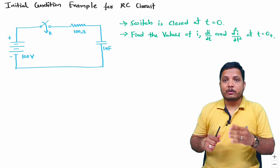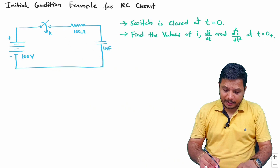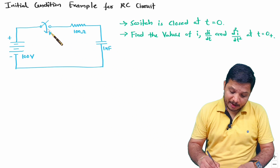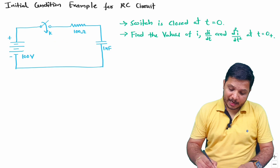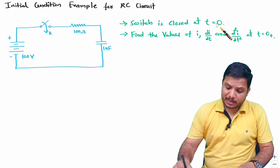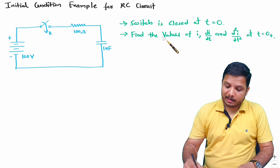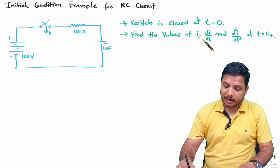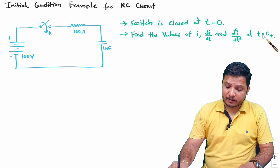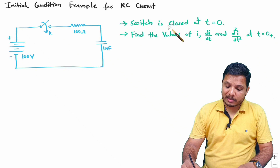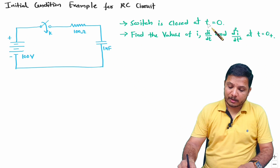Let us try to understand what will happen with this circuit. Here we have an RC circuit in which switch K is getting closed at time t equals 0. We are required to find the values of current i, di/dt, and d²i/dt² at time t equals 0 plus.